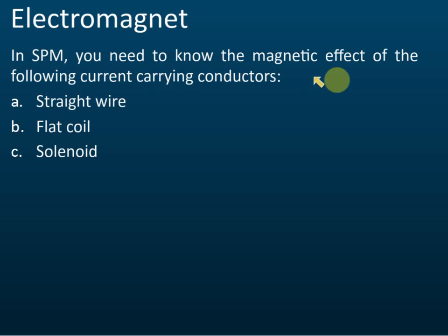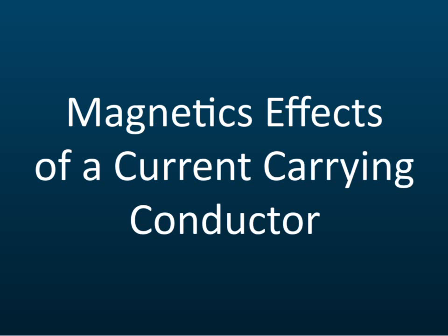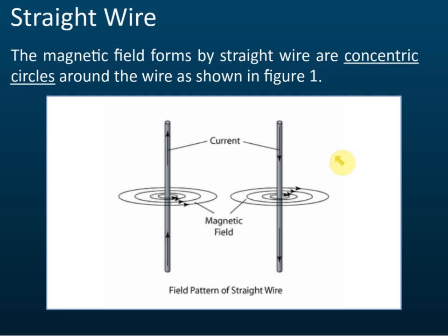For SPM, you need to know three magnetic effects: straight wire, flat coil, and solenoid. Let's start with the straight wire. The magnetic field formed by a straight wire consists of concentric circles around the wire. Concentric circles means the center of all circles is always at the same point — the wire itself.